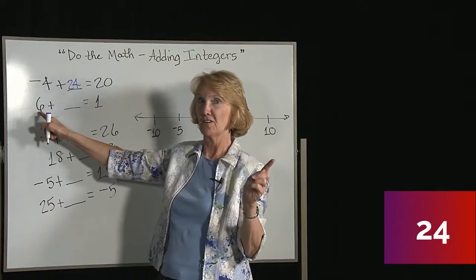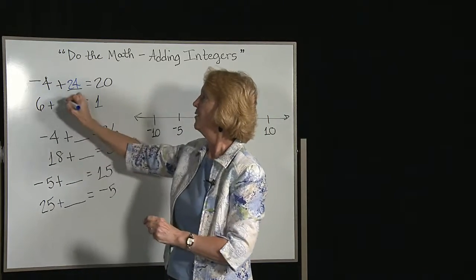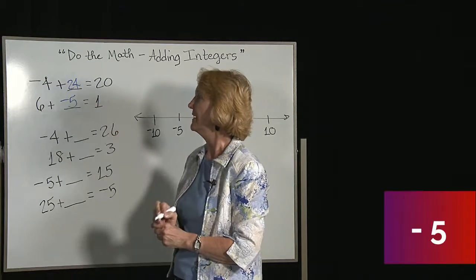On this one, if we start out at 6 and we drop down to 1, we must have added a negative 5.